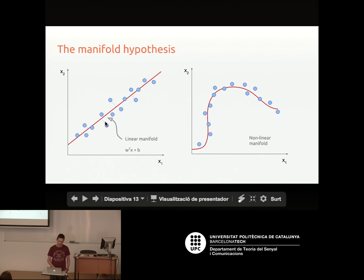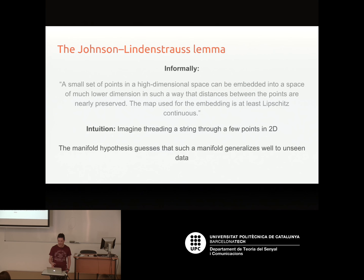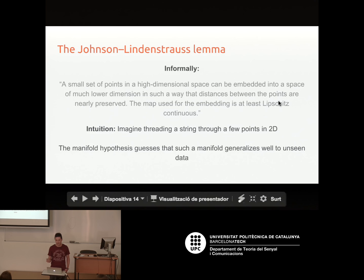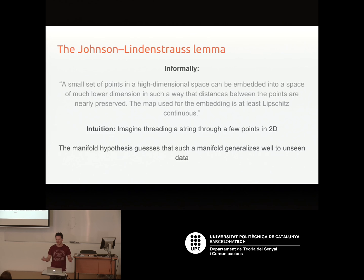Here is an example of a linear manifold, like you would get from PCA: to represent points by points on the manifold, you just project them down onto it. On the right is a non-linear manifold where points seem to lie on some sort of curve. There is a lemma stating that for a small number of points in a high-dimensional space, such a manifold exists that approximately preserves the distance between points, and the manifold is at least continuous and smooth. This doesn't really tell us about generalizability, but it tells us such a manifold can exist.